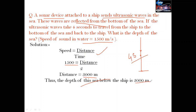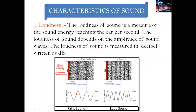Now we will see some characteristics of sound. The very first characteristic is loudness. The loudness of sound is the measure of sound energy reaching the ear per second — how much sound energy strikes our ear in one second. The loudness of sound depends on the amplitude of the sound wave. The loudness of sound is measured in decibels, abbreviated as dB.